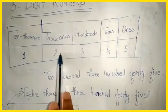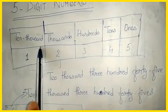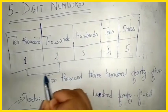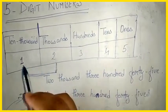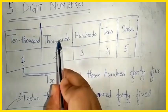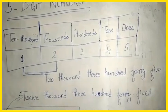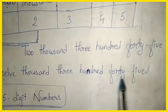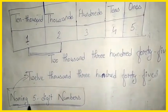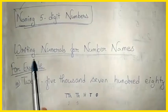We read four-digit numbers starting from the thousands place. But when it comes to five-digit numbers, we take these two places together. The 1 is in the ten-thousands place, so ten thousand plus two thousand equals twelve thousand. So we read this number as twelve thousand three hundred forty-five. This is how we name five-digit numbers.